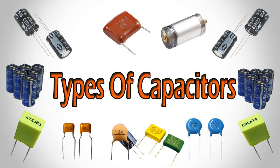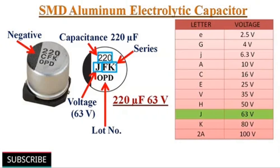Decoupling capacitors, also known as bypass capacitors, are used to stabilize the voltage supply to components, particularly integrated circuits (ICs). Placed in parallel with the power supply lines of an IC, decoupling capacitors act as local energy reservoirs, providing a low impedance path for high-frequency components of the load current. When an IC or other component draws sudden pulses of current, the decoupling capacitor supplies the necessary charge, preventing voltage drops and ensuring a stable power supply. This helps prevent undesirable effects such as signal distortion, malfunctions, or noise caused by variations in the power supply voltage.